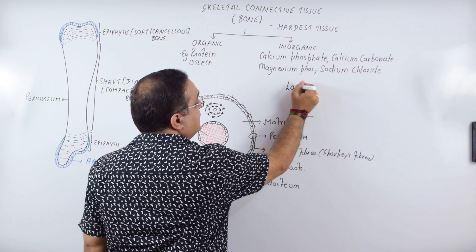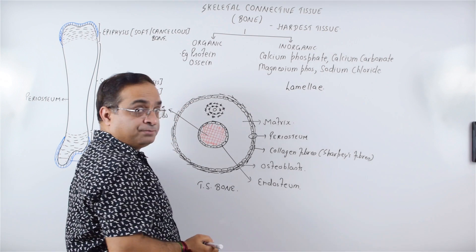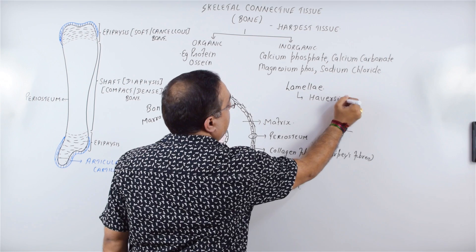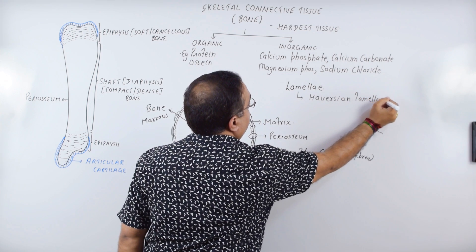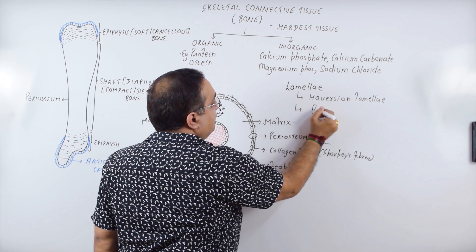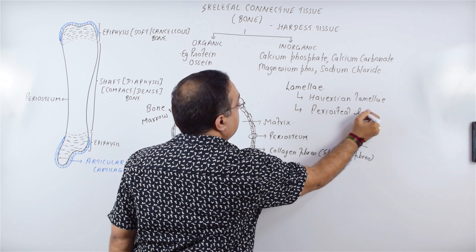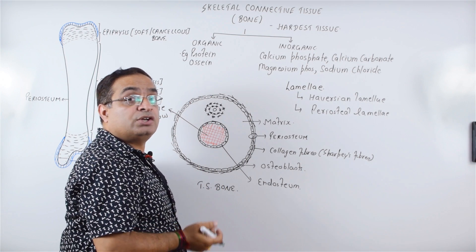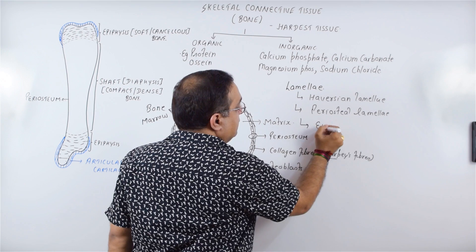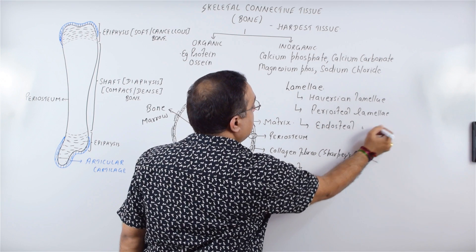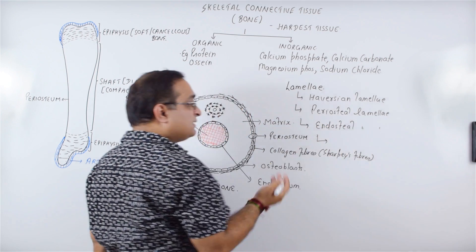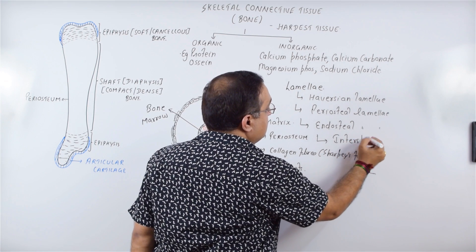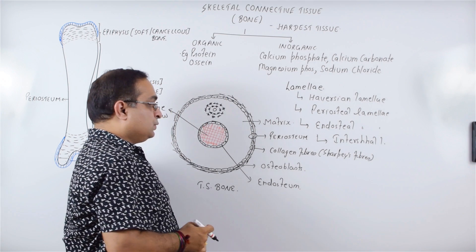There are different types of lamellae. One type is Haversian lamellae. Then we have periosteal lamellae towards the periosteum, also called outer circumferential lamellae. Near the endosteum we have endosteal lamellae, or inner circumferential lamellae. In addition to these, there are interstitial lamellae.